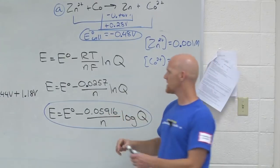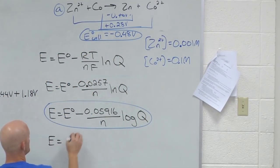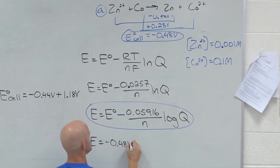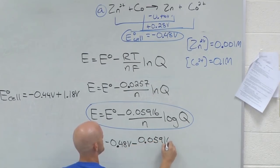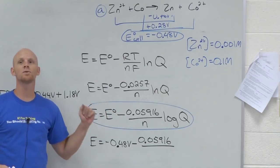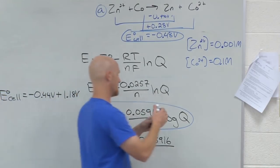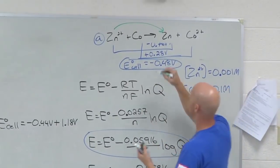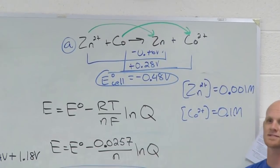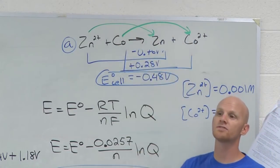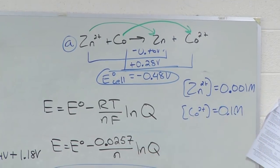We need to use the Nernst equation to get there. We still use the standard value, which is negative 0.48 — that came from data out of a book. But now we have this extra fudge factor: 0.05916 over N. N in this context means moles of electrons transferred in the balanced reaction. For zinc 2+ turning into zinc, that's two electrons gained. For cobalt turning into cobalt 2+, that's two electrons lost. So two electrons are transferred overall, and we plug in 2 for N.